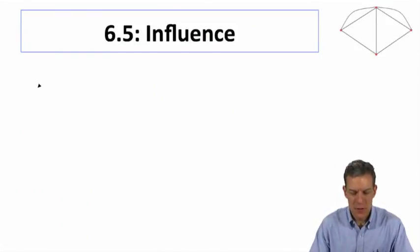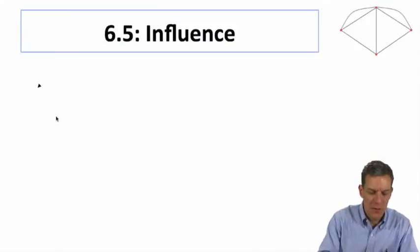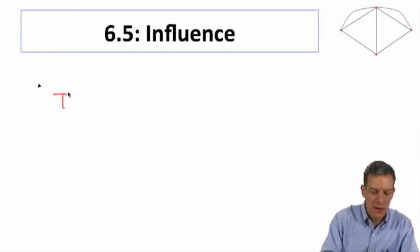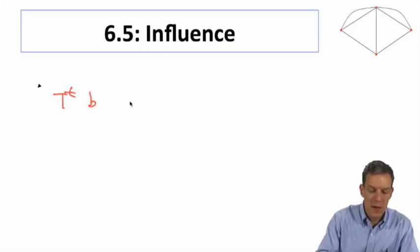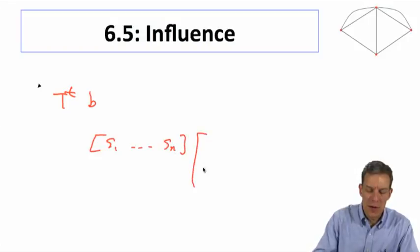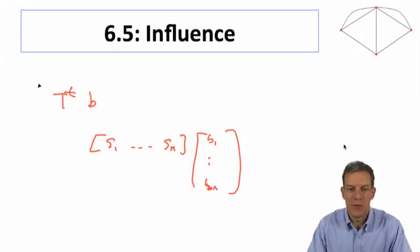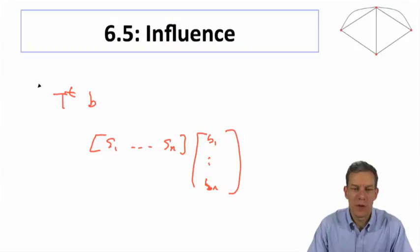Let me reiterate what we looked at before when we looked at T to the t raised times b. When we're looking at the limit of this, we're looking for some vector s1 through sn which, when multiplied by b1 through bn, gave us back the beliefs in terms of what the limiting beliefs are.